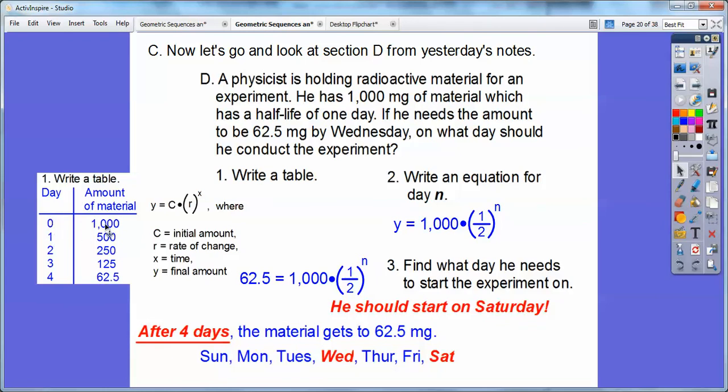Day 0 was 1,000. And then after one day, it was cut in half because it was this half-life right there, so it went down to 500. Then after two days, it was cut in half again, so it went down to 250. After three days, it was cut in half again, so it went to 125. After four days, it went down to 62.5.